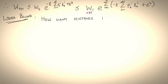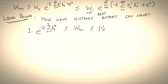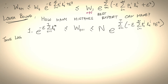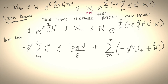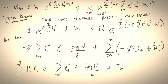Applying this property, we rewrite the term as W_t times e to the minus epsilon times expected loss plus epsilon squared. So we have a bound relating W_{t+1} to W_t. Applying this bound over t time steps, we get an upper bound of W_1 — which is n — times e to the sum over expected loss plus epsilon squared. The lower bound is more straightforward: W_{t+1} is lower bounded by e to the power minus epsilon times the sum of losses made by the best expert.